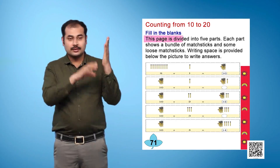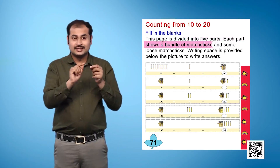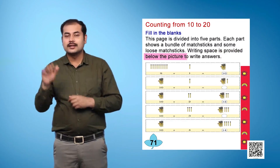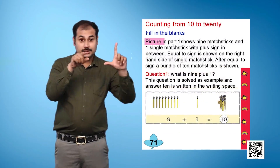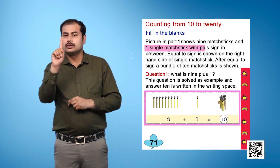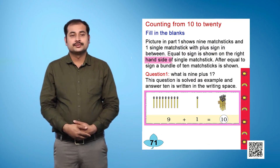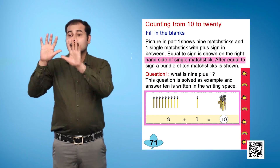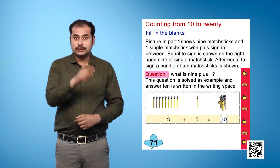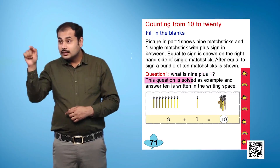This page is divided into five parts. Each part shows a bundle of matchsticks and some loose matchsticks. Writing space is provided below the picture to write answers. Picture in Part 1 shows 9 matchsticks and 1 single matchstick with a plus sign in between. After the equal to sign, a bundle of 10 matchsticks is shown. Question 1: What is 9 plus 1? This question is solved as an example.